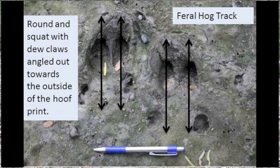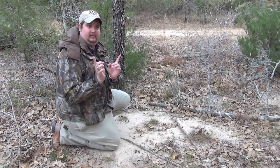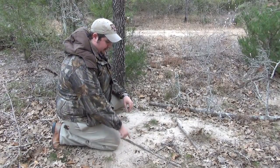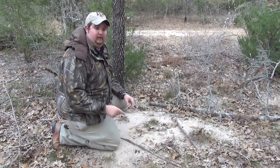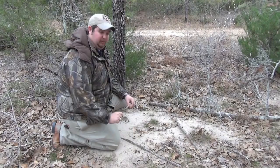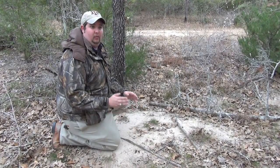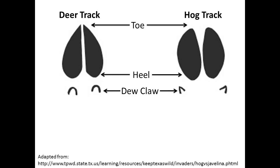Also, if you can find the dewclaw marks, feral hog dewclaw marks are usually going to be almost angled a little bit out like this, aiming towards sort of the outsides of the hoof print itself, whereas the deer's are going to be pretty much parallel with the hoof print itself.